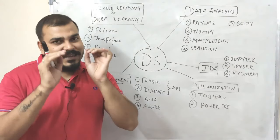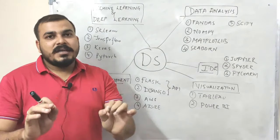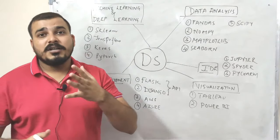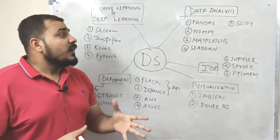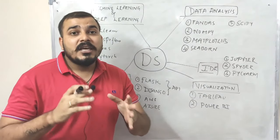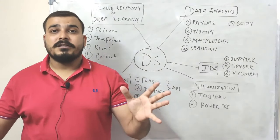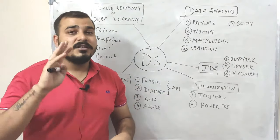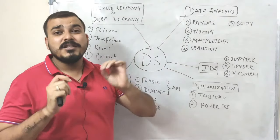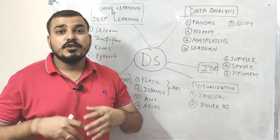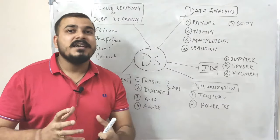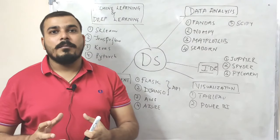Remember guys, every project in data science is basically a machine learning project. Data analysis or feature engineering will be taking about 30% of the time of the project. So if your project is for three months, one month will basically be going into feature engineering only, because you have to do a lot of things in feature engineering to make the data in the right format.